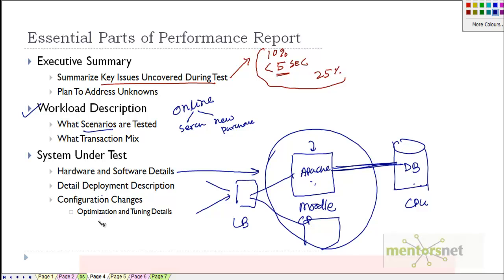You also give the configuration changes - what kind of tuning you have done. For example, if in the database you changed the shared pool size or any other parameters, you should note those down. You can put them in a glossary covering everything you have changed. This is the optimization and tuning requirements section.